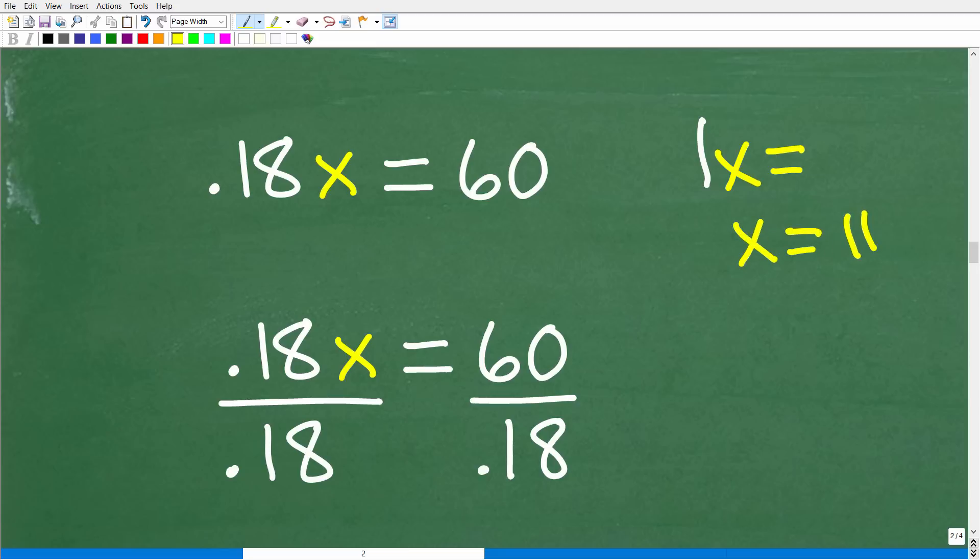Because 1x is the same thing as x. And again, whatever x is equal to is going to be our answer. So I have 0.18x. So how can I get a 1 in this situation? Well, 0.18 times x, well, this is really easy. If I take 0.18 and divide it by itself, anything divided by itself is 1. So here, I'm going to end up with a 1x. So 0.18 divided by 0.18 is 1. Or I'm going to end up with a 1x.